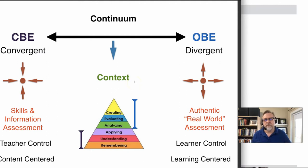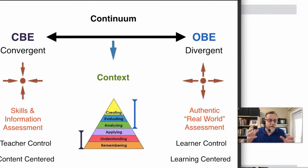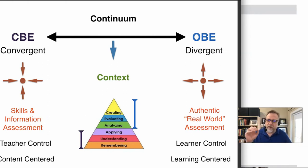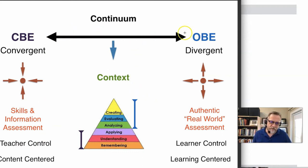To position 3320, you need to look at key things like authentic real-world assessment. There are three primary activities within the course that are authentic learning opportunities — the learner is in control. It is a learner-centered course, divergent in the sense that skills and abilities developed here can be applied in a variety of different places. There is no formal testing of skills, no competency-based measurement, very little teacher control, and it's not really content-centered. This course fits very clearly as a fully outcomes-based education course.